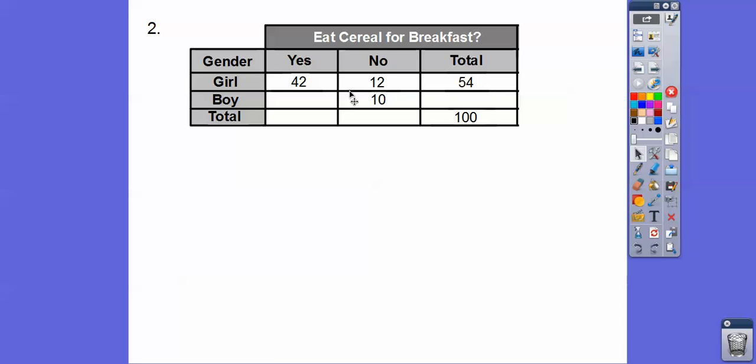This one's a little bit more tricky. Again, you can start wherever you want. We can start by adding these or we can start by subtracting because this is the total right here. I kind of forgot what I did right here. Oh, I subtracted first. So 100 minus 54 gives us 46.